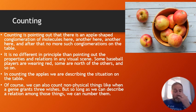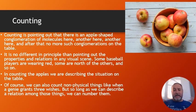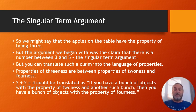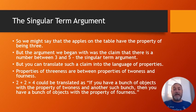She says counting apples is no different than picking out other properties that objects have — we're just describing a situation on a table or wherever. Of course we do sometimes count non-physical things: in a story, if a genie grants three wishes, we can count those wishes, so long as we can describe the relation we can number them. We could say the apples on the table have the property of being three. But recall the singular term argument — the claim that there is a number between three and five doesn't talk about number properties, it uses the number as a singular term.